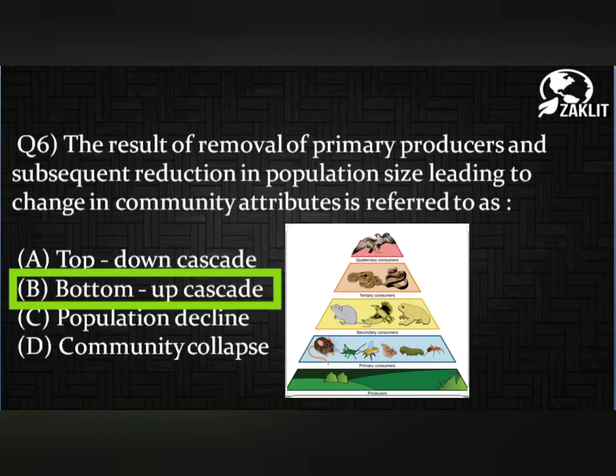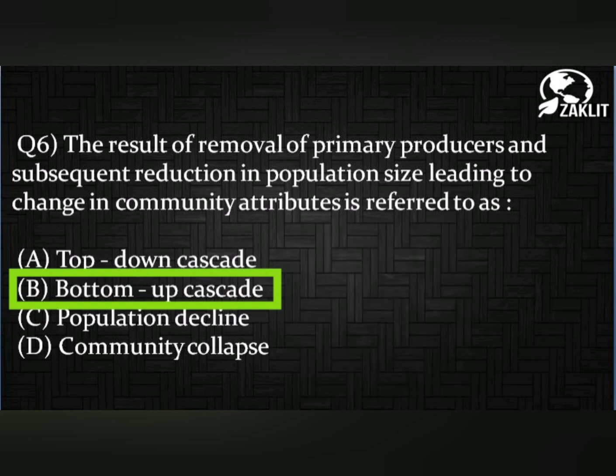Question number six was: the result of removal of primary producers and subsequent reduction in population size leading to change in community attributes is referred to as — the correct option is option B: bottom-up cascade. Because if anything happens at the producer level, it will affect the other levels as well.